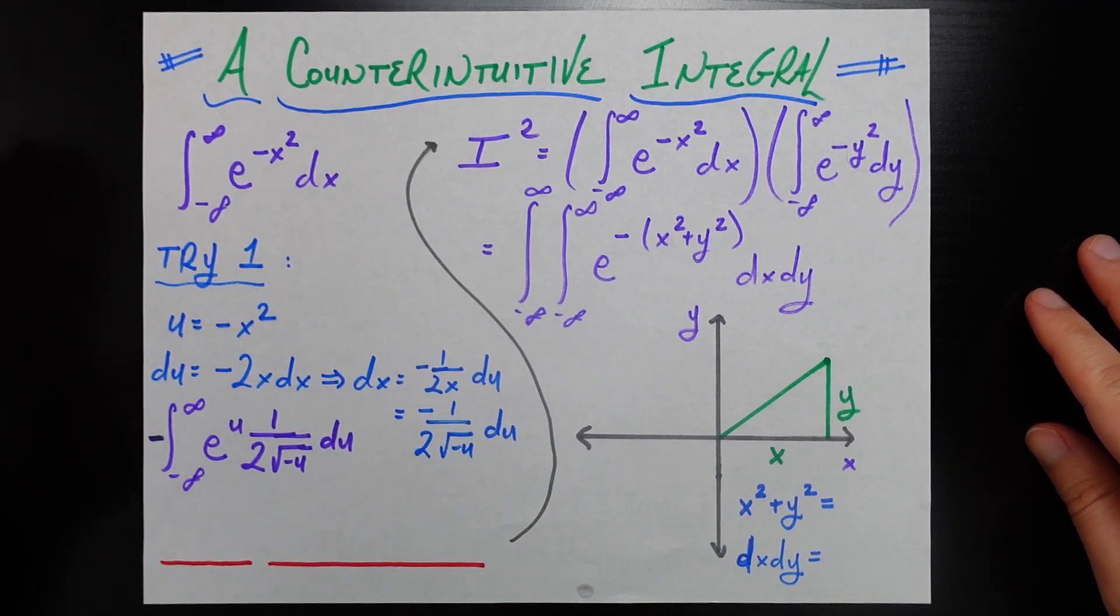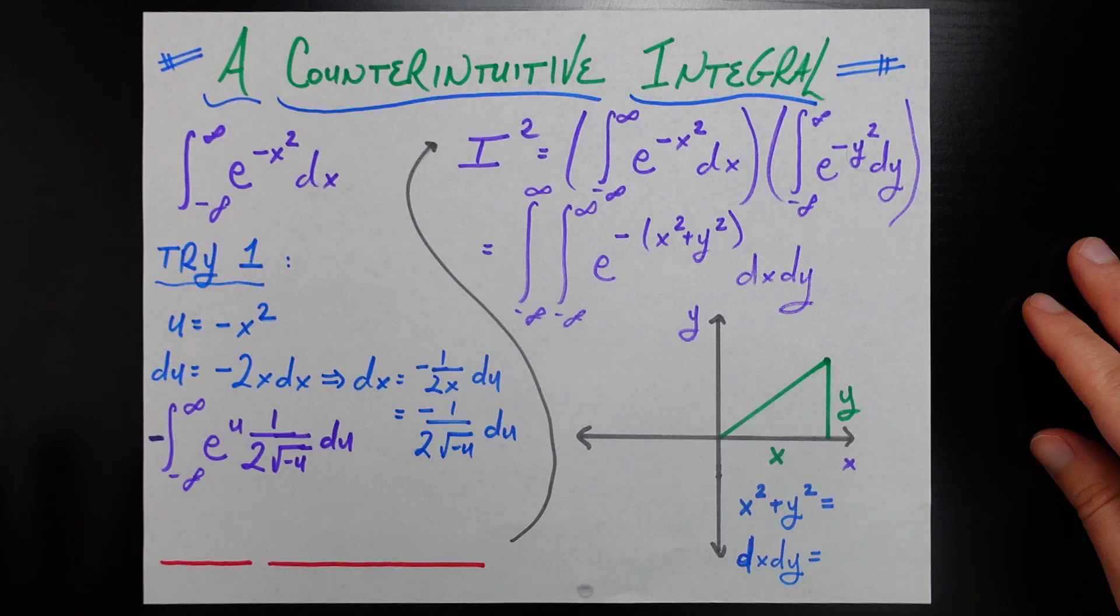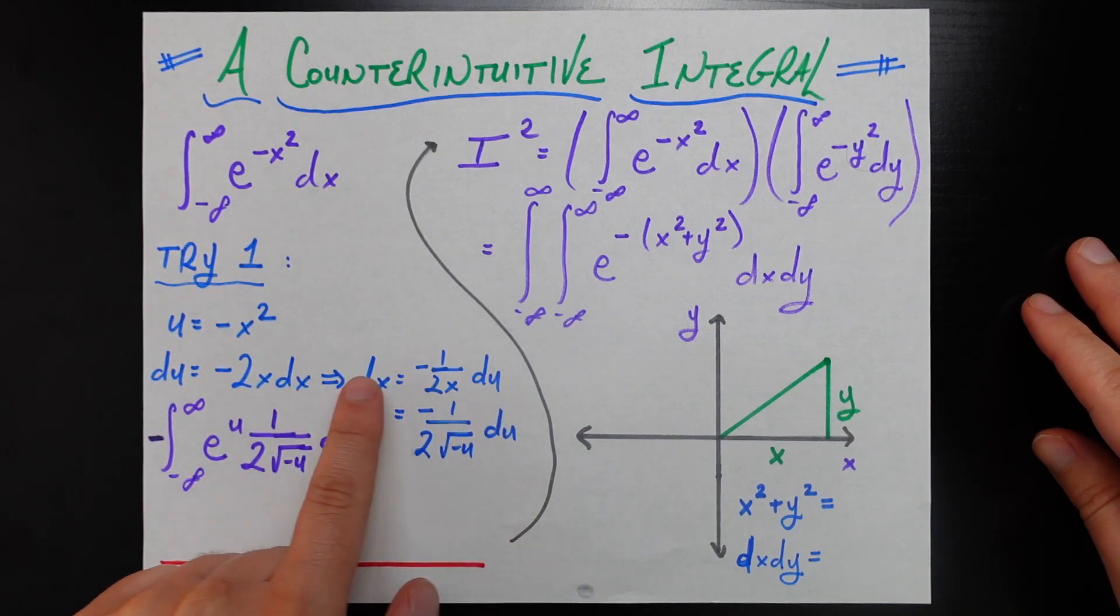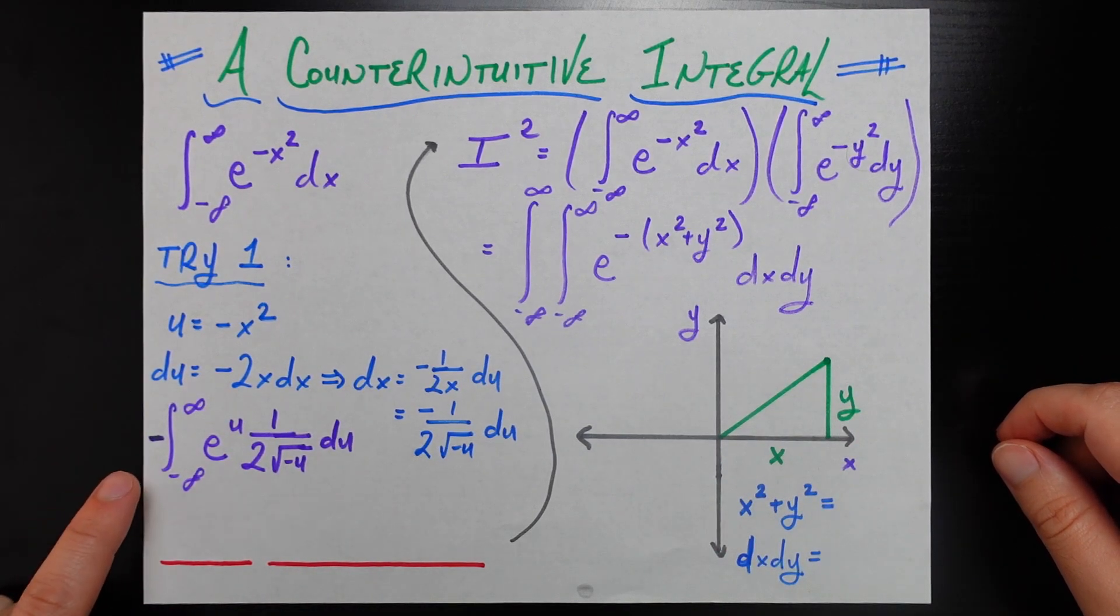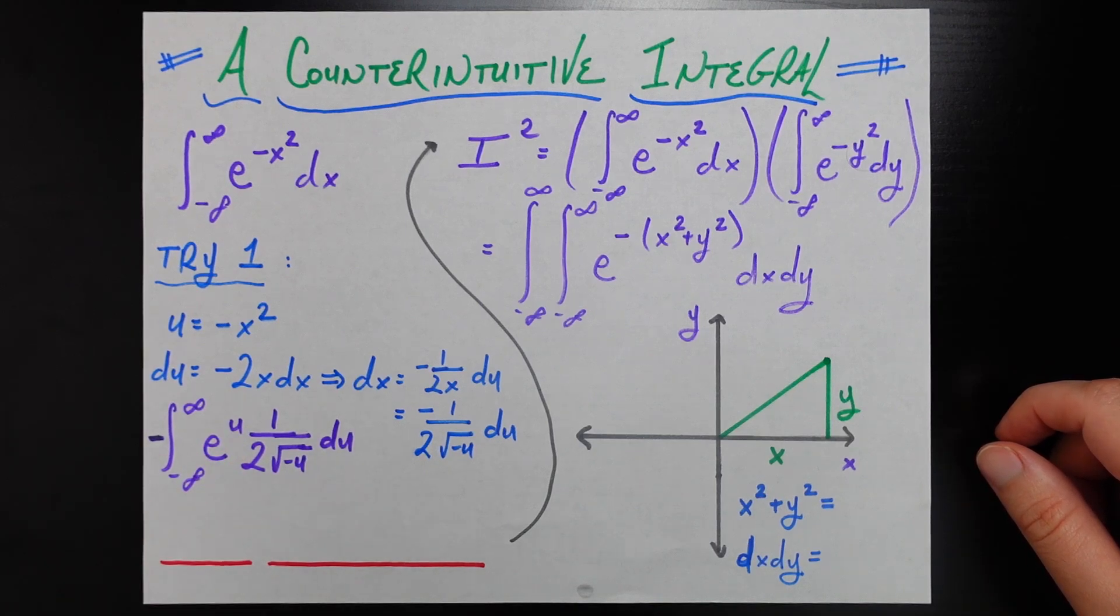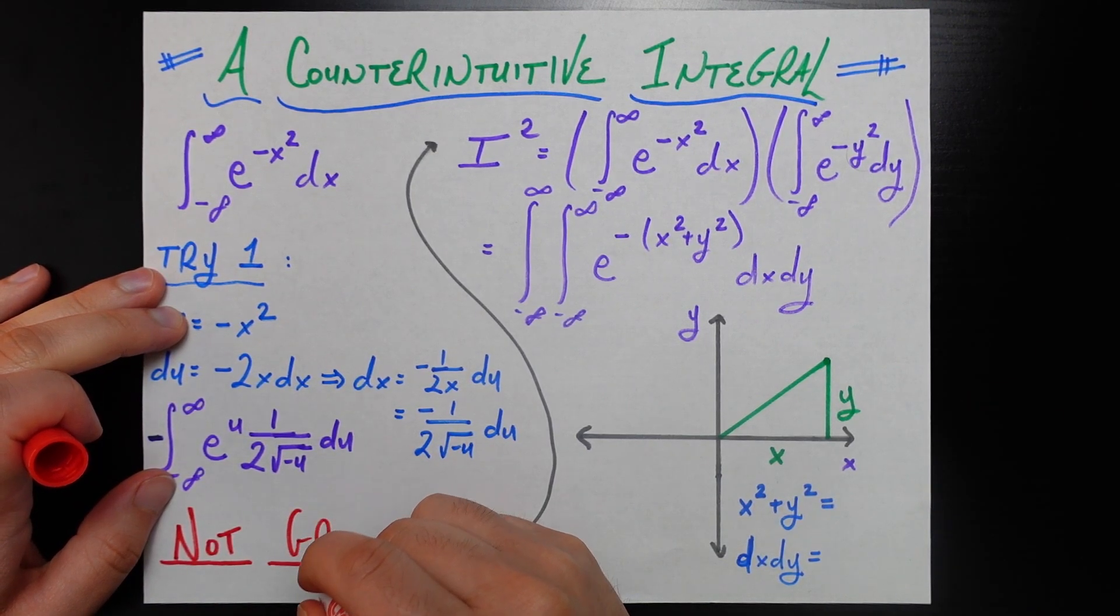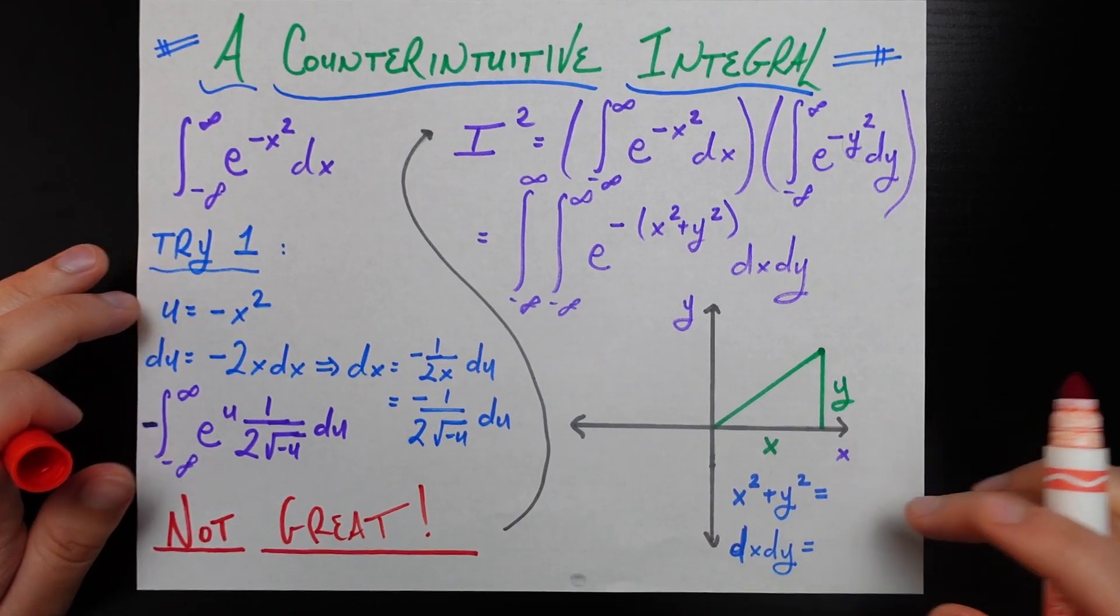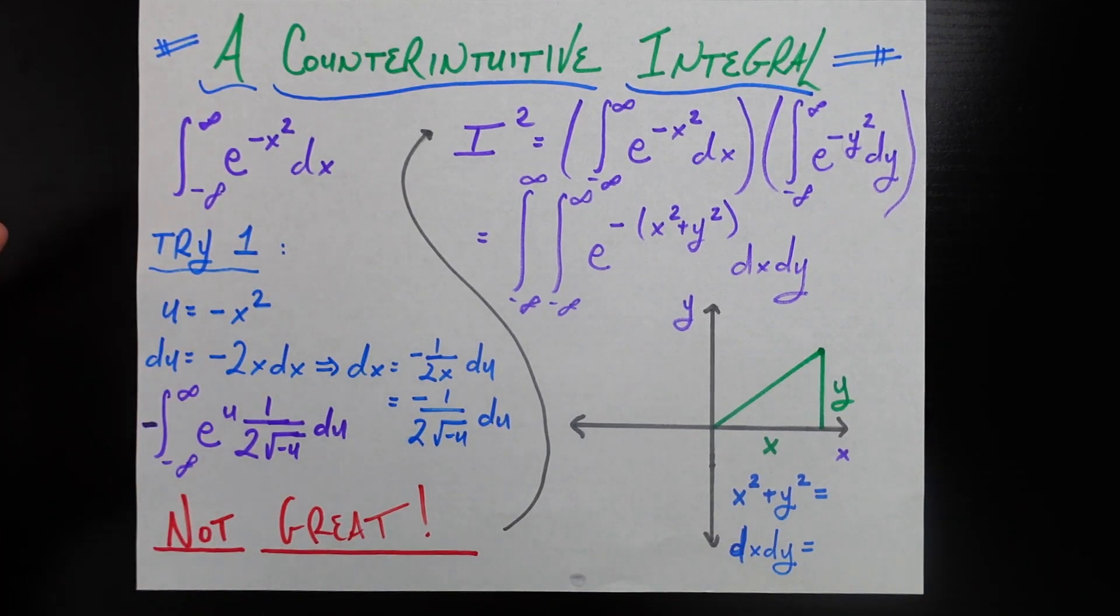Now we have all the pieces to rewrite this integral in terms of u. The bounds stay the same. We have e to the u, so that part got simpler. But what we eventually find is that the integral simplifies to the negative integral from negative infinity to positive infinity e to the u times 1 divided by 2 square root negative u. This does not seem great. We made it more complicated.